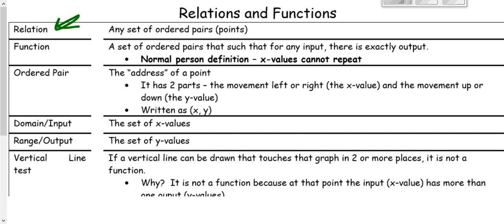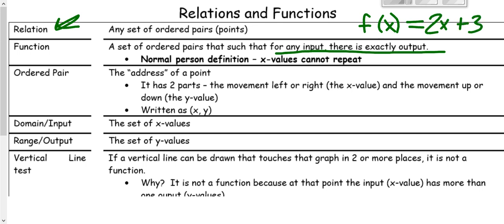A function is a special type of relation — it's a set of ordered pairs where for any input there's exactly one output. Sometimes a function is given in equation form, meaning we have an input, plug it into the function, simplify, and get one value out. For it to be a function, anytime you plug something in, you only get one answer.